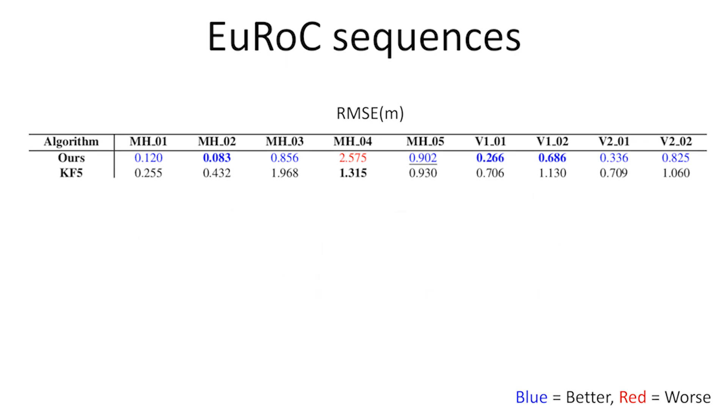We compared the translation error of our method with KF5, since both have a similar computation time. The table shows the translation error in meters of these two methods. Blue indicates our approach performing better than KF5, whereas red indicates a worse performance. For a similar computation time, our method achieves better accuracy. We achieve an average improvement of 46% in translation error compared to KF5.